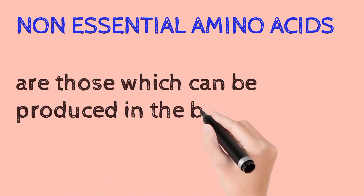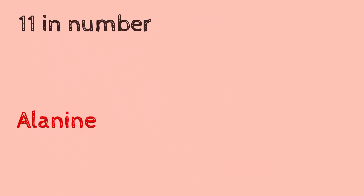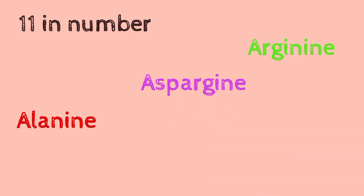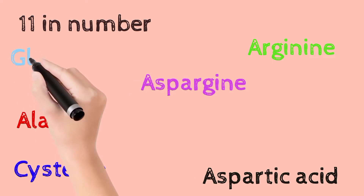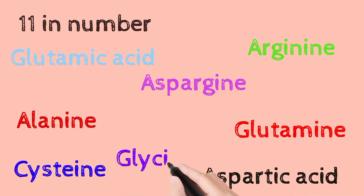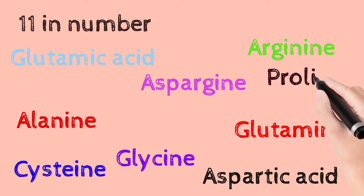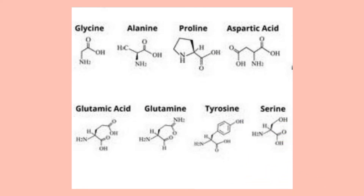Non-essential amino acids are those that can be produced in the body. They are 11 in number: alanine, arginine, asparagine, aspartic acid, cysteine, glutamic acid, glutamine, glycine, proline, serine, and tyrosine. Here you can see some of the structures of non-essential amino acids like glycine, alanine, proline, aspartic acid, glutamic acid, glutamine, tyrosine, and serine.